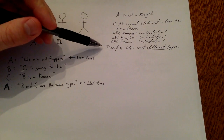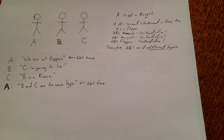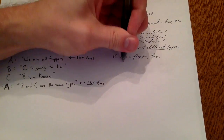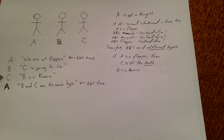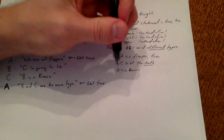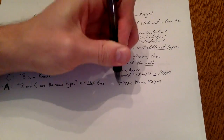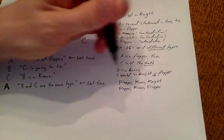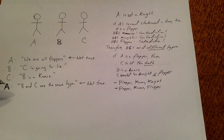So now we've determined that B and C are of different types, and both of A's statements are false. A could be lying both times because A is a knave, or A could be lying both times because A is a flopper and C told the truth. If A is a flopper and C told the truth, then B is a knave. And B saying "C is going to lie" is a lie, so C is telling the truth. C could either be a knight or a flopper, and either situation works. Therefore, we have two possibilities here: flopper-knave-knight or flopper-knave-flopper.